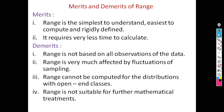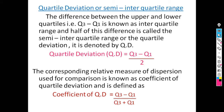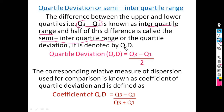To overcome this drawback, the next measure of dispersion is quartile deviation, also known as semi-interquartile range. The difference between the upper and lower quartiles, Q3 minus Q1, is known as the interquartile range. Half of this difference is called the semi-interquartile range or quartile deviation, denoted QD, defined as QD equals (Q3 minus Q1) divided by 2, where Q1 is the lower quartile and Q3 is the upper quartile.